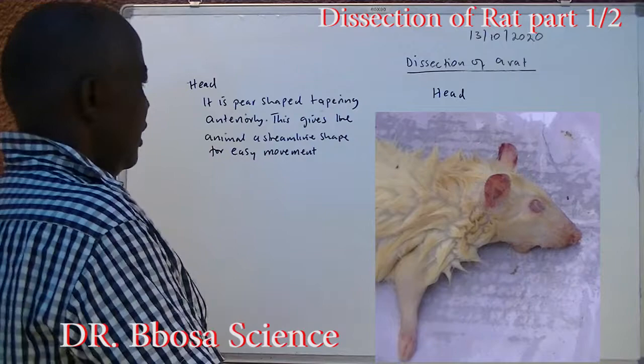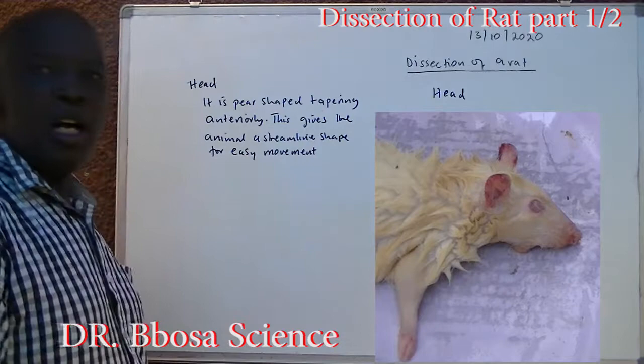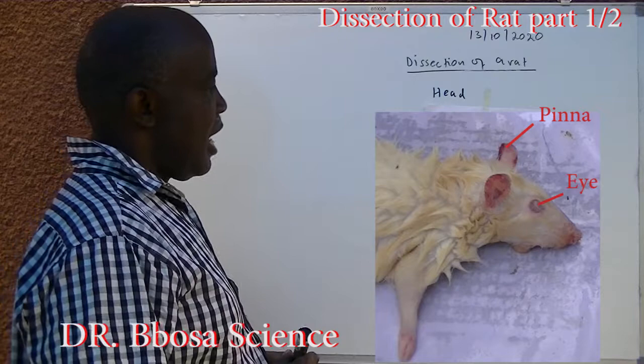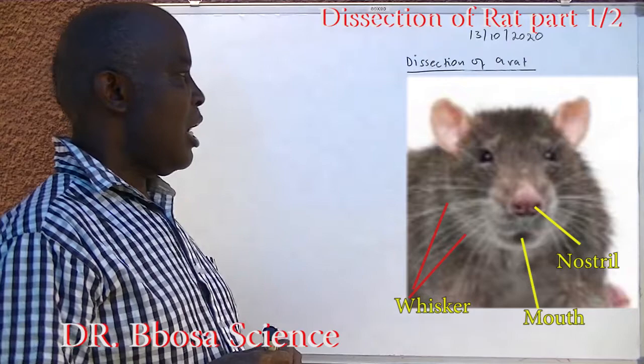The head is pointed and tapering anteriorly. This gives the animal a streamlined shape for easy movement. External features on the head include the pinna, eye, whisker, nostril and mouth.